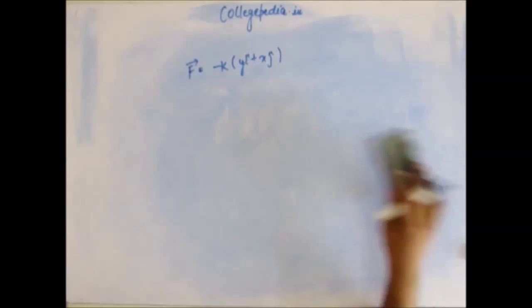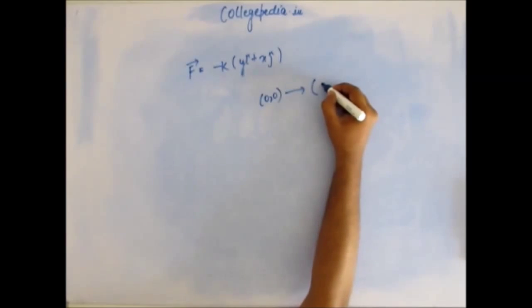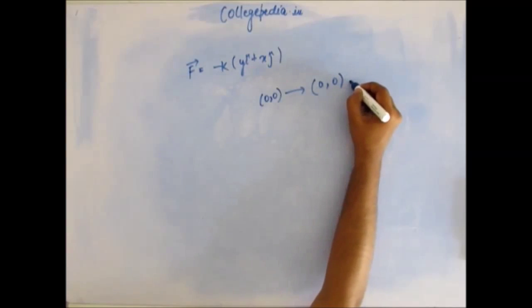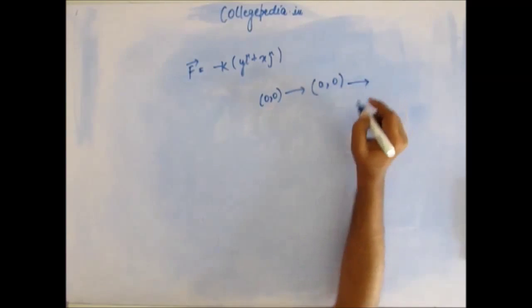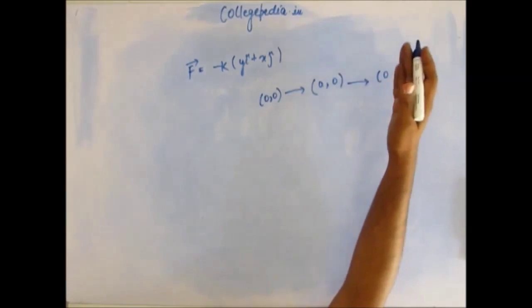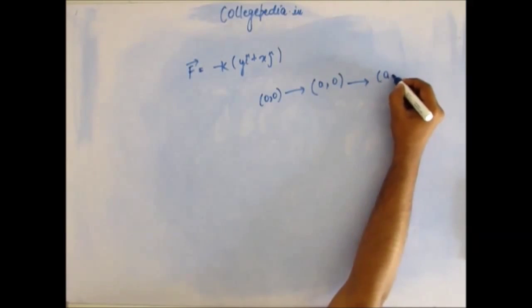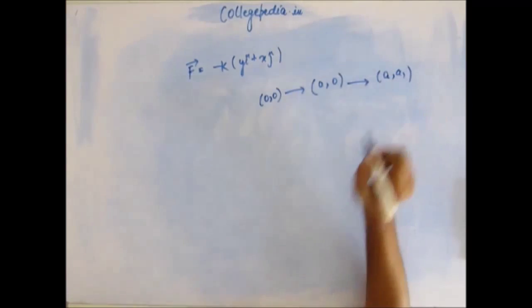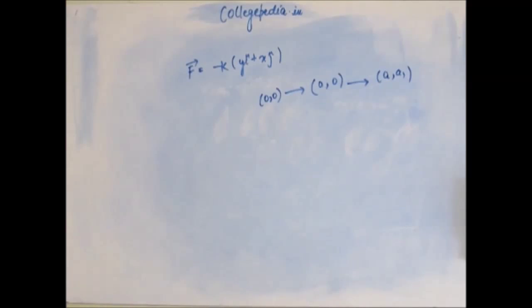The force is given by this in Cartesian form. The body initially is kept at origin (0,0), and it has been moved from origin to a point on x-axis (a,0). And from there, it has been moved vertically towards y-axis, parallel to y-axis, it has been displaced to the point (a,a).